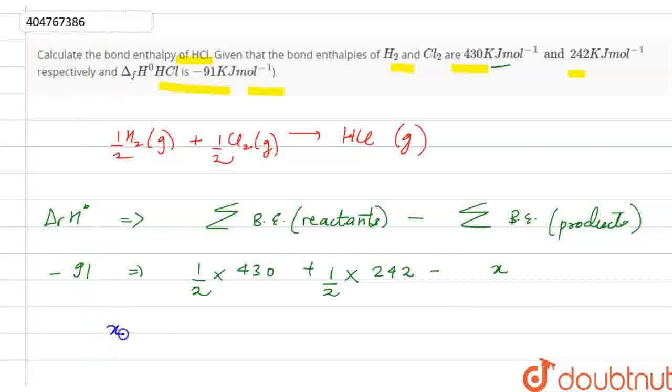So if I have to calculate x's value, then how can we write it? 430 divided by 2, which is 215, plus 242 divided by 2, which is 121, plus 91.